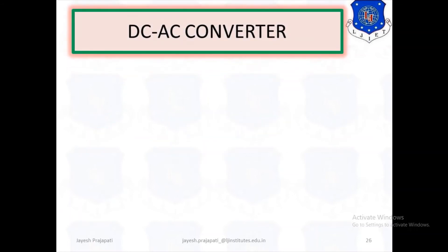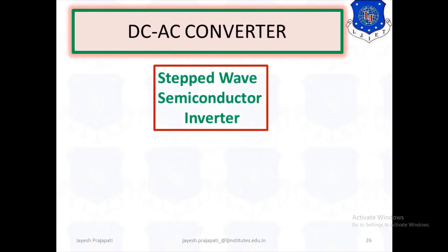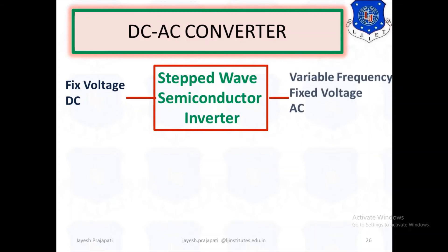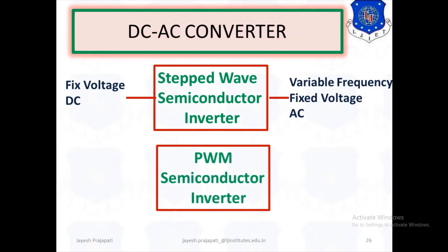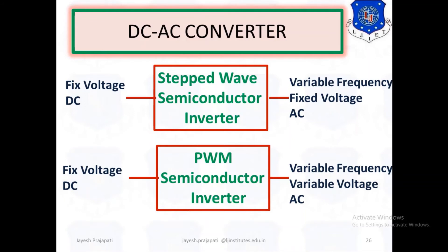The DC to AC converter is also called an inverter. A step wave semiconductor inverter takes fixed voltage DC as input and gives variable frequency, fixed voltage AC at the output. If a PWM semiconductor inverter is used, then from fixed voltage DC we can get variable frequency and variable voltage AC at the output.